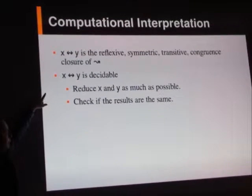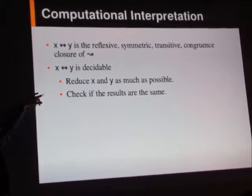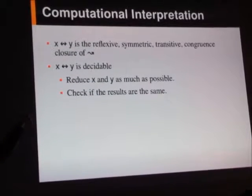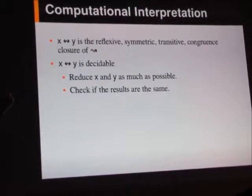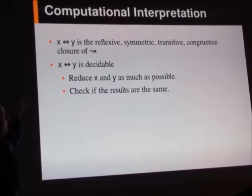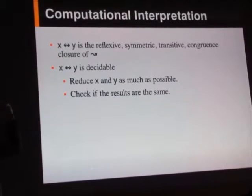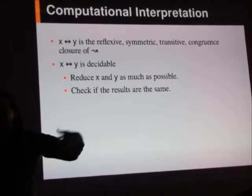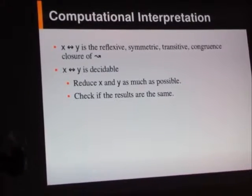This relationship is decidable. And the algorithm, although it's not necessarily the best algorithm, but an algorithm for deciding whether X and Y are related by this, is what you do is you just run the reduction steps on X and Y going forward on every sub-expression that you can get your hands onto